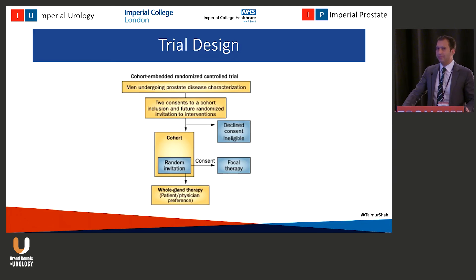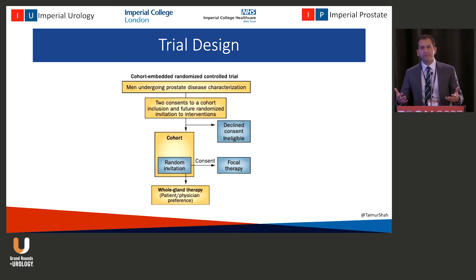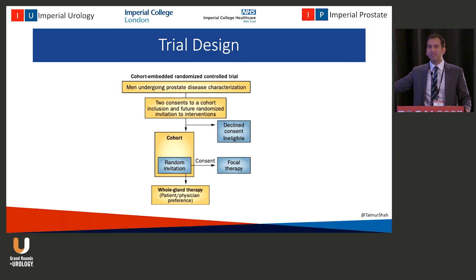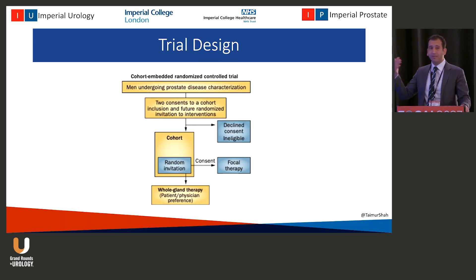A third design we haven't really utilized yet is called cohort embedded RCTs. There are methodological and ethical issues around this sort of study. Basically all patients accept being part of a cohort, and then we choose randomizations within that cohort in a second stage — telling patients they have been randomized into treatment A or treatment B, without upfront disclosure that they're making a decision. We have this in other cancers but not yet in prostate cancer. It's a way of getting around a lot of the equipoise issues and difficulties patients face in choosing between multiple options.